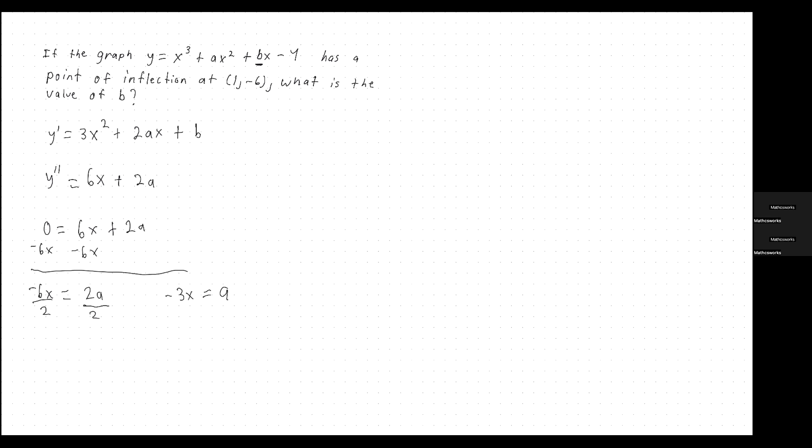So we're given the x value because the main statement tells us that the point of inflection is at the point (1, -6). So the x value here is 1. So let's just plug in 1 and see what we get. So negative 3 times 1 is just negative 3. So that equals a.